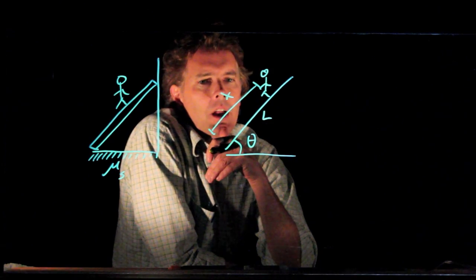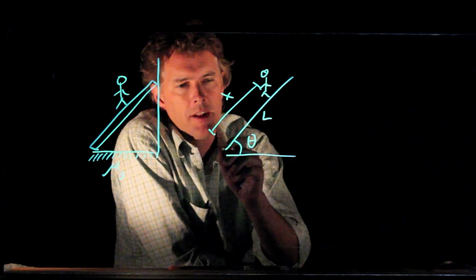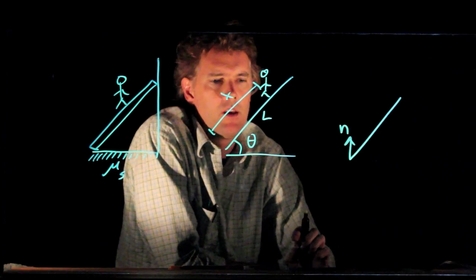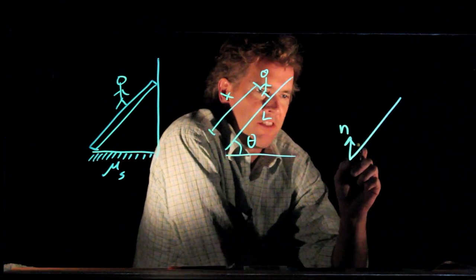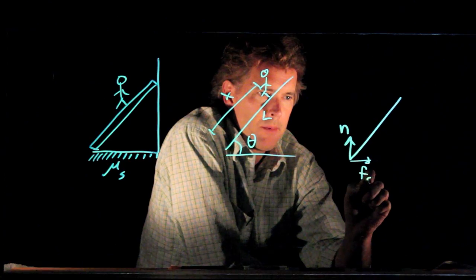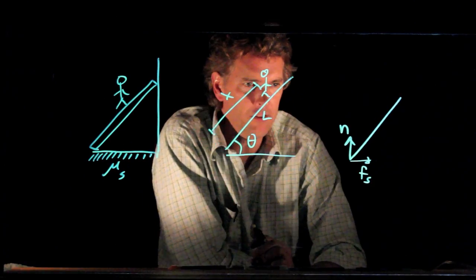So down at the bottom we of course have the normal force, n. There is a static frictional force, which is trying to keep the bottom of that ladder in place, so that's F sub s.